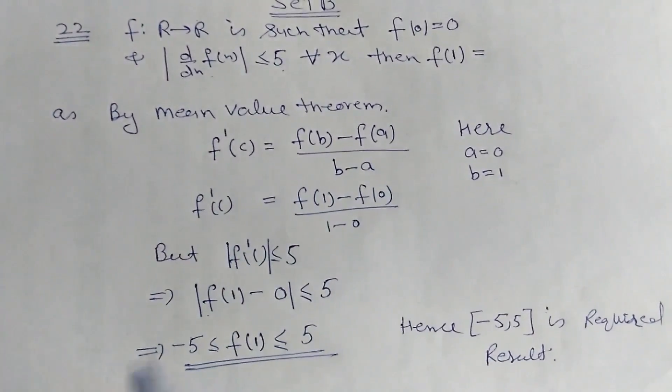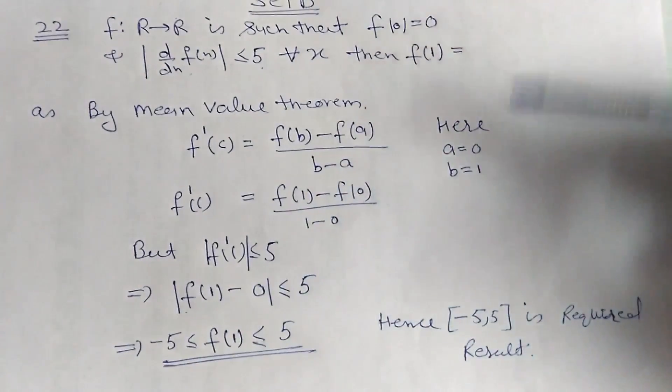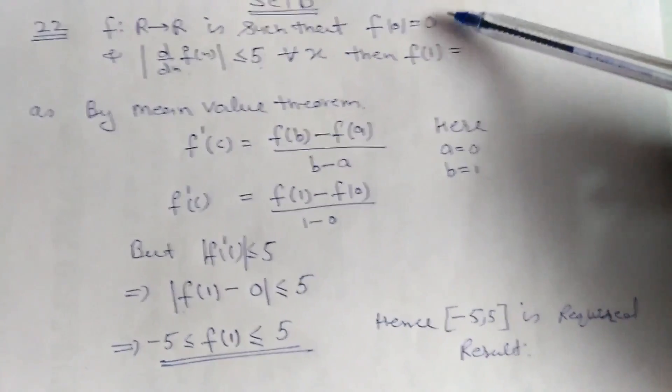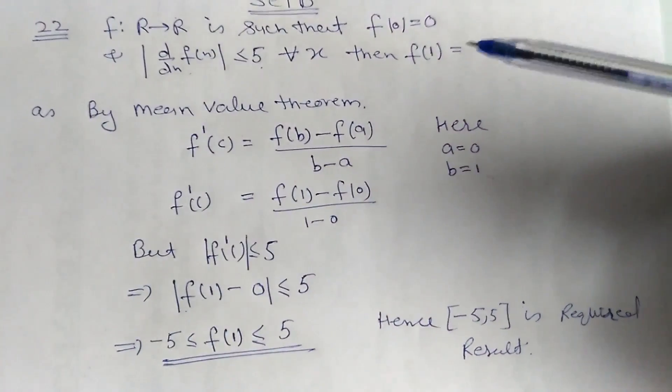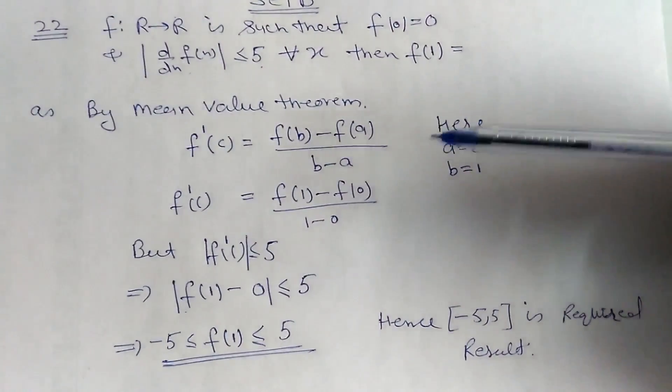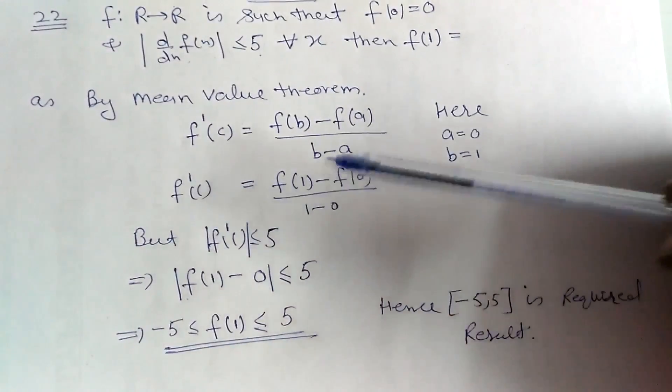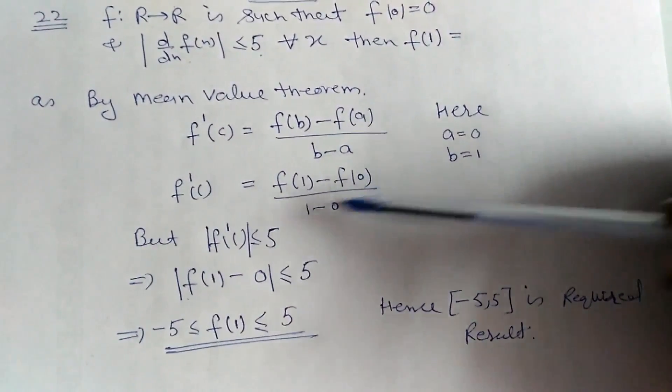Here we have a = 0 and b = 1. So I am just placing the values: f'(c) should equal [f(1) - f(0)] / (1 - 0).